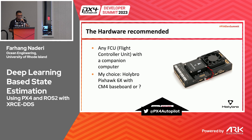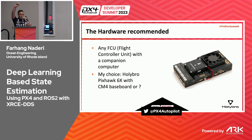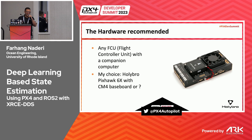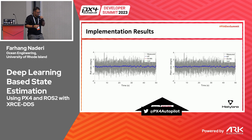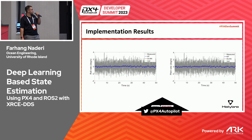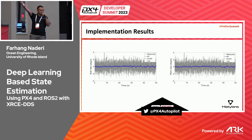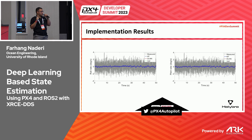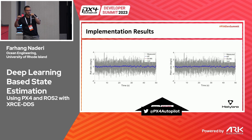I have done my implementation on the Pixhawk 6C with CM4 carrier board, which already has this capability. This is the actual result we're talking about: data coming from the sensor is already a mess, we know that. The output from the Kalman filter is what we normally see in logs. What I've added on top — after implementing the neural network model — is that the data becomes smooth enough to be as close as possible to real time, matching what you actually observe.